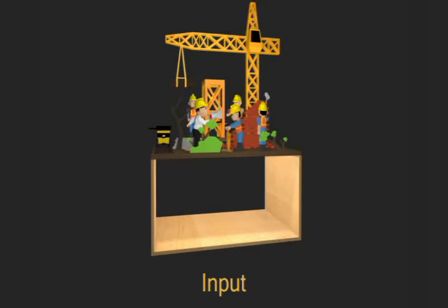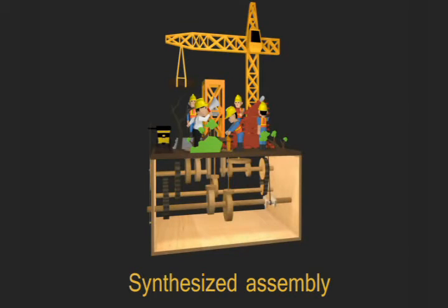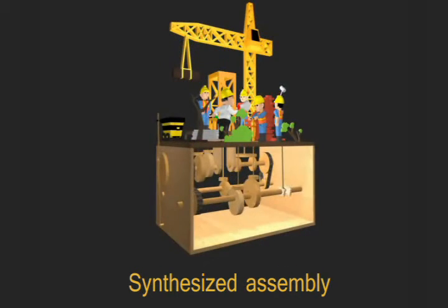The construction site toy contains animations of different periods. Our system automatically initializes multiple driving axes, and installs a belt pulley to transmit motion at the required ratio of angular velocity.